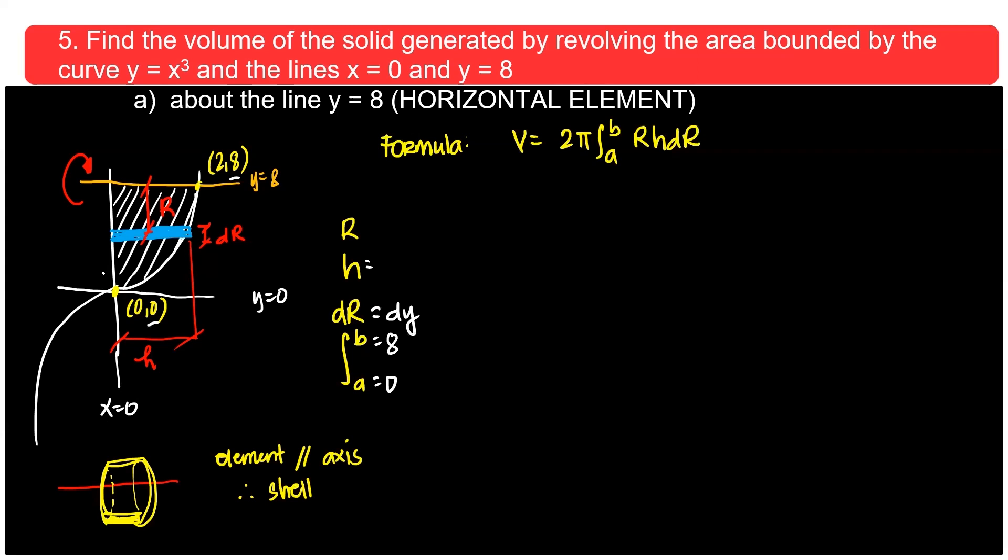Now, the height of the element is this. It's x right minus x left. What's the x of the right? x is equal to x cubed. Therefore, x is equal to the cube root of y. Minus what's the x left? Look, the x left is 0 because x equals 0 or like that.